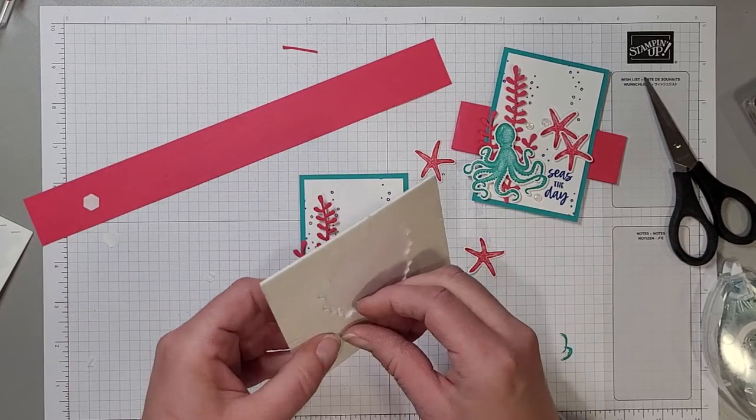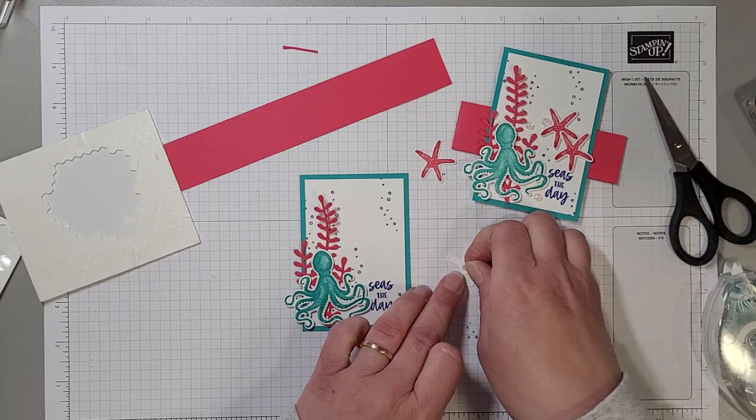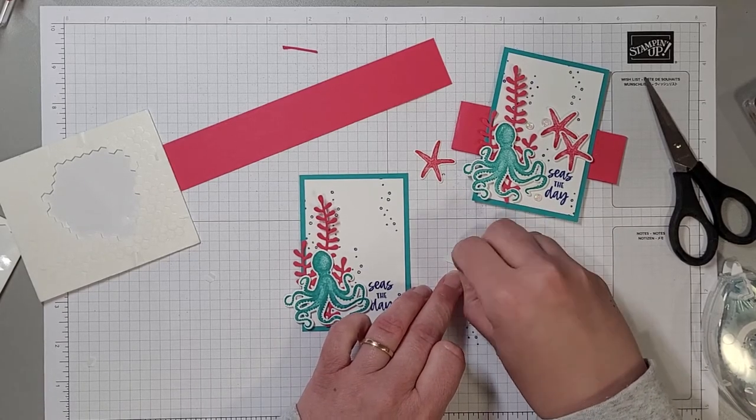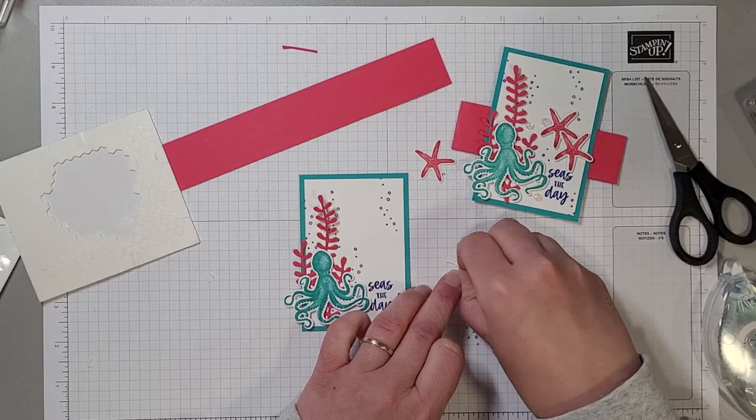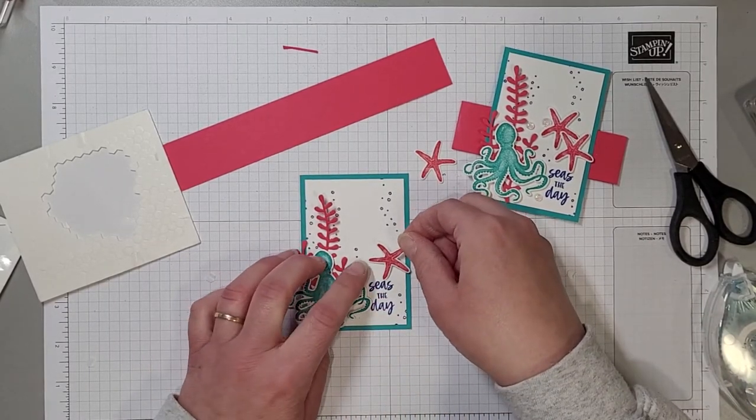And then with a mini dimensional again we're going to put one right in the center of our starfish.